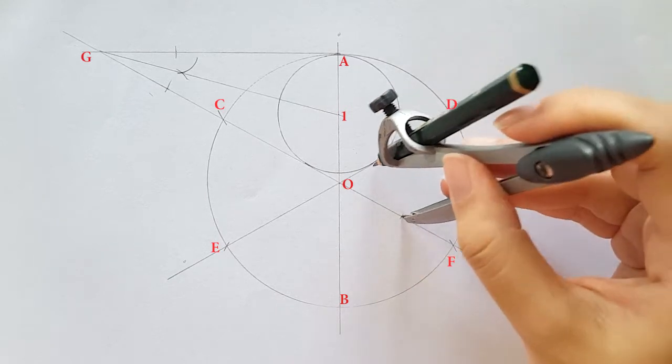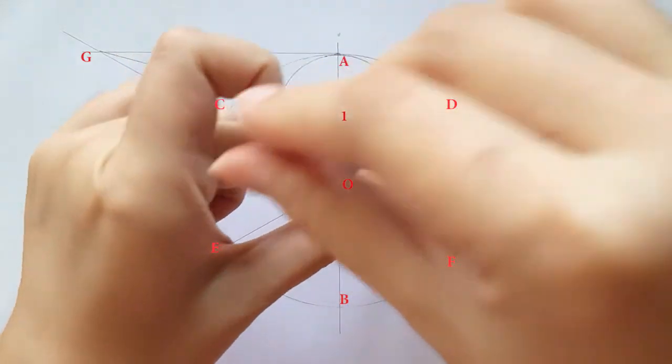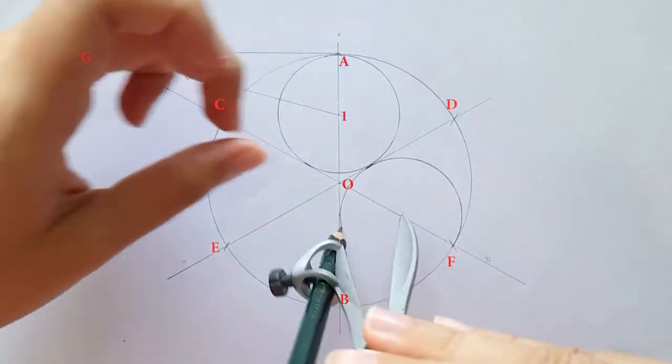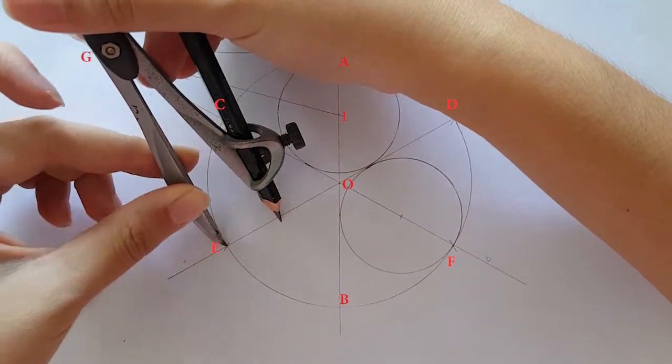Then, place your compass on marked point to draw a circle. Repeat this step on line OE.